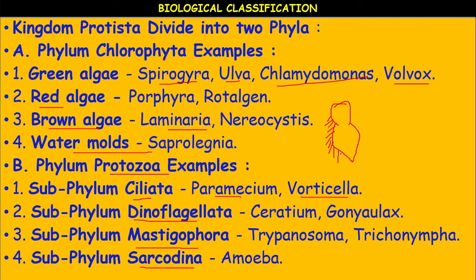Antoine van Leeuwenhoek called these protozoans 'animalcules' — they are not animals, but animalcules. Paramecium is also called the slipper animalcule. It shows two nuclei: macronucleus and micronucleus. Vorticella has a bell-shaped structure and also moves with the help of cilia, so it is called the bell animalcule.